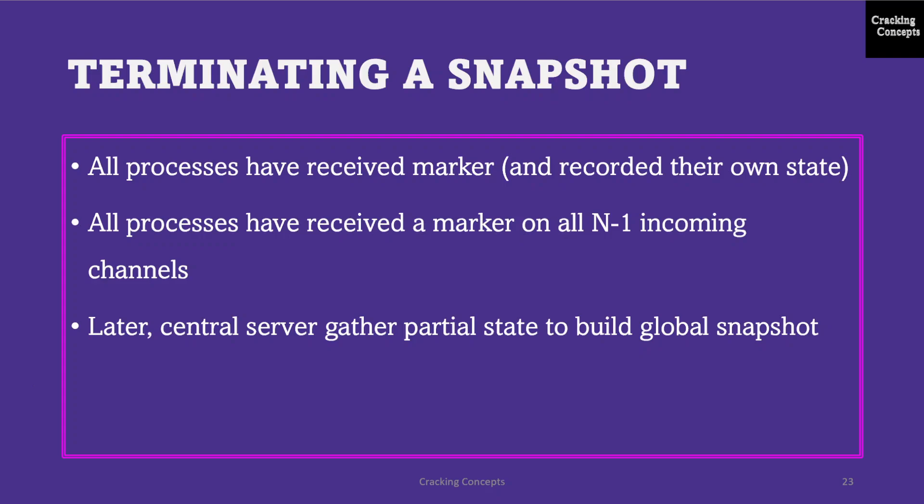To terminate a snapshot, all processes must have received a marker and recorded their own state. All processes must have received a marker on all n-1 incoming channels and recorded the state of those channels. Later, a central server can gather the partial states to build a global snapshot.